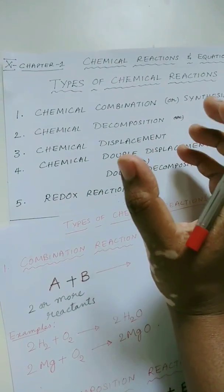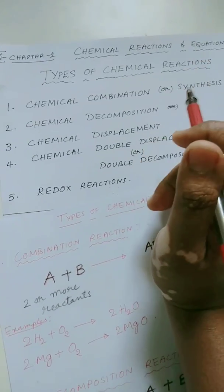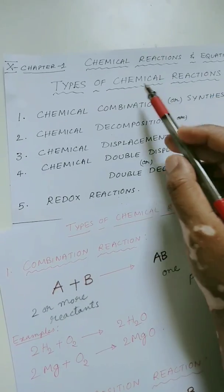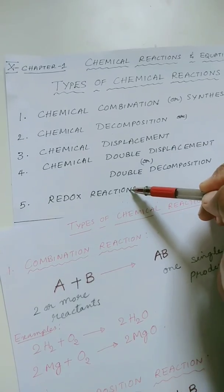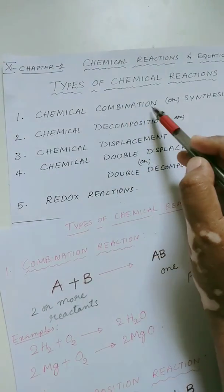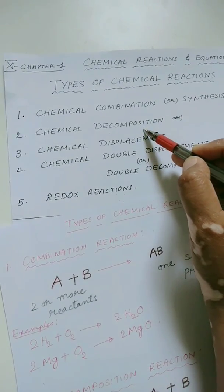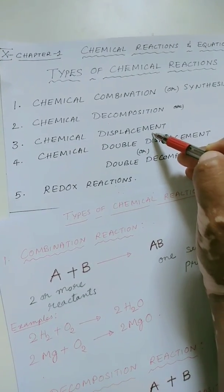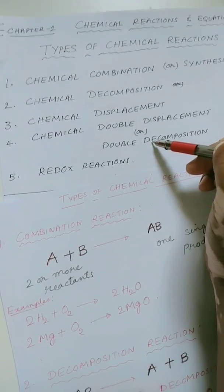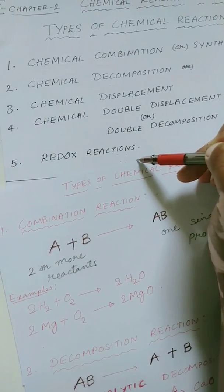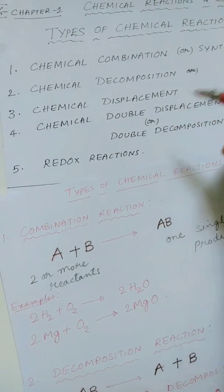As you know, there are so many chemical reactions and it's hard for anyone to memorize all of them. So, for our convenience, the various chemical reactions have been majorly classified into five types. The first one is chemical combination reaction, also called as a synthesis reaction. Chemical decomposition reaction. Chemical displacement reaction. Fourth one is chemical double displacement reaction. And redox reaction. So, let's learn about each one of them in detail.